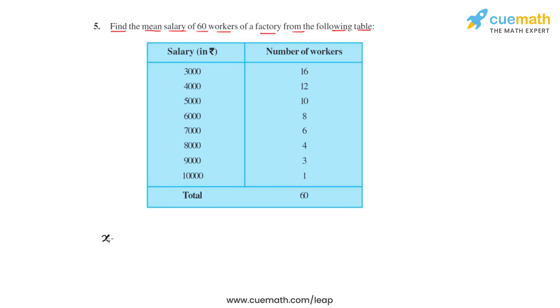Mean X bar equals Sigma Xi times Fi divided by Sigma Fi, where Sigma means summation, that is the sum of all.